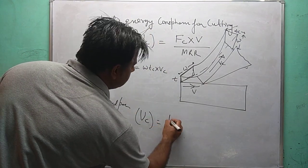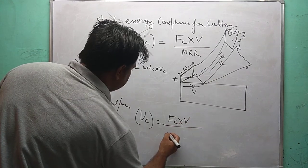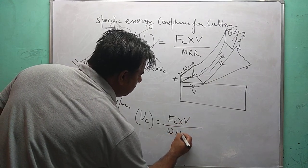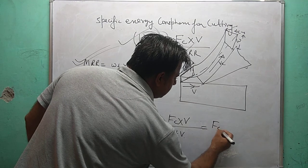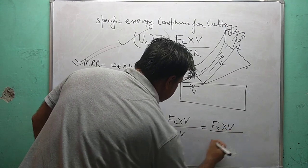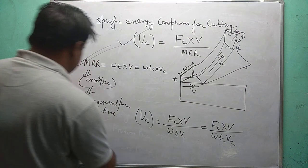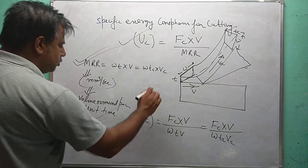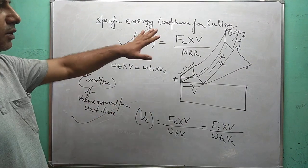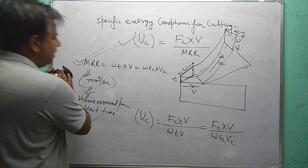Specific energy consumption during cutting, U suffix C, is cutting power Fc into cutting velocity V, divided by material removal rate W×T×V. This simplifies to Fc over W×T, or equivalently Fc×V over W×Tc×Vc. In this way you may calculate the specific energy consumption for cutting.